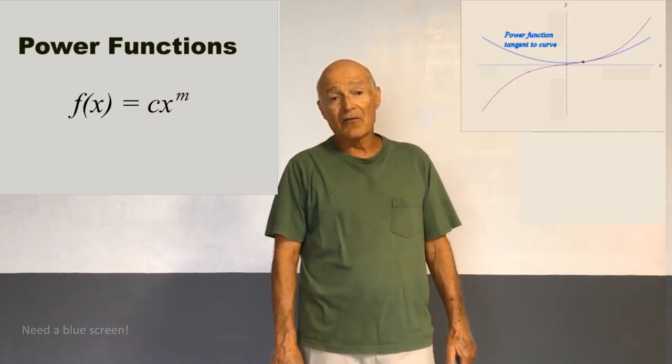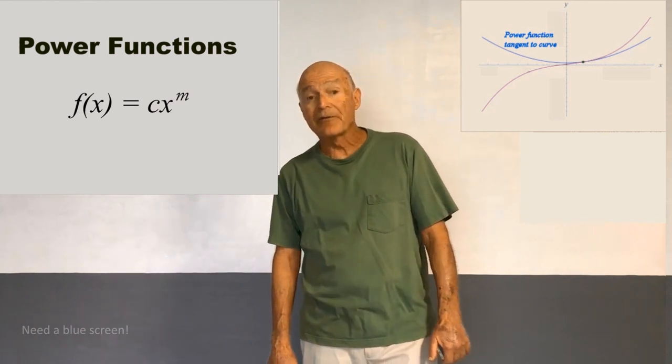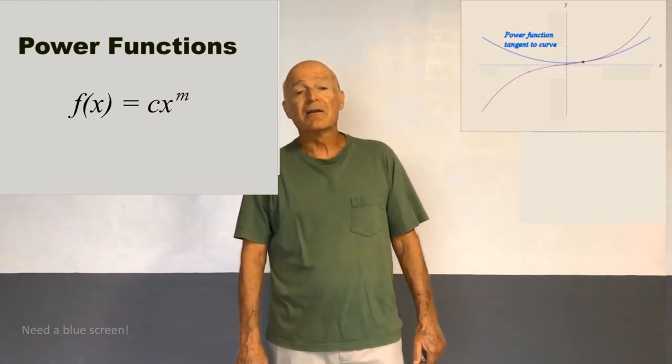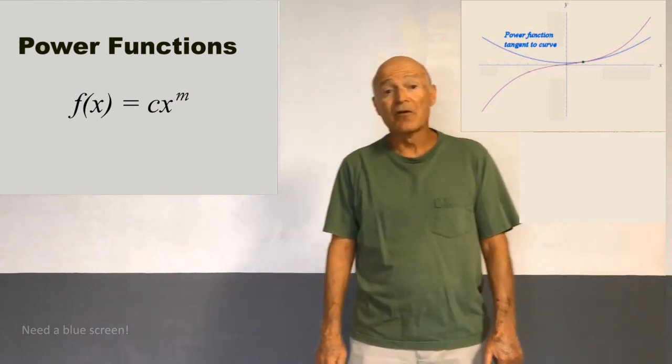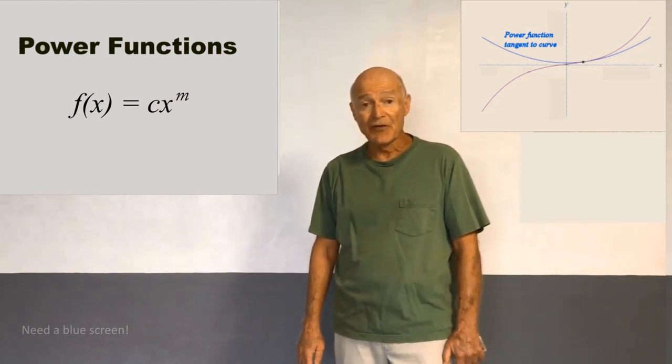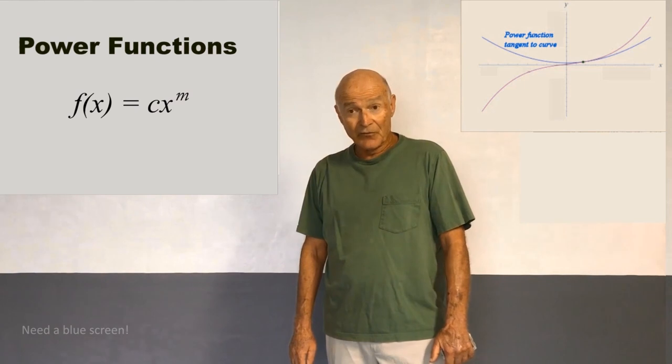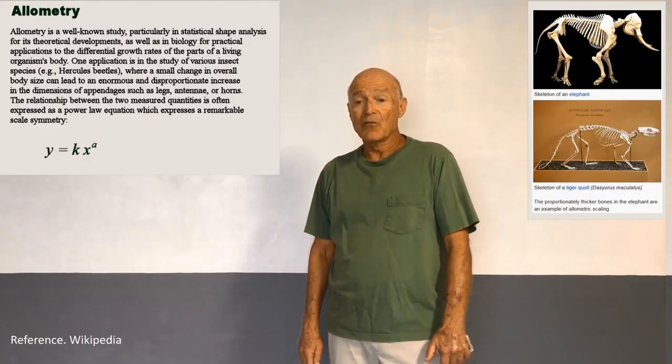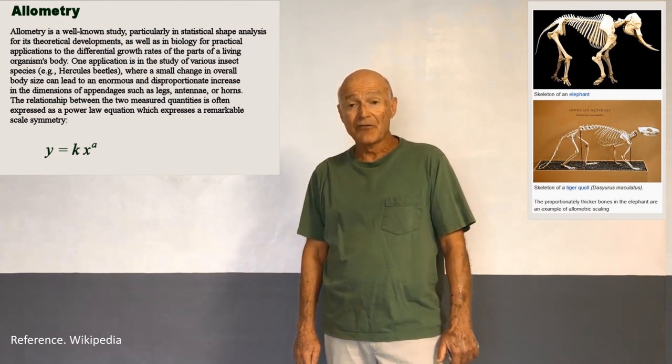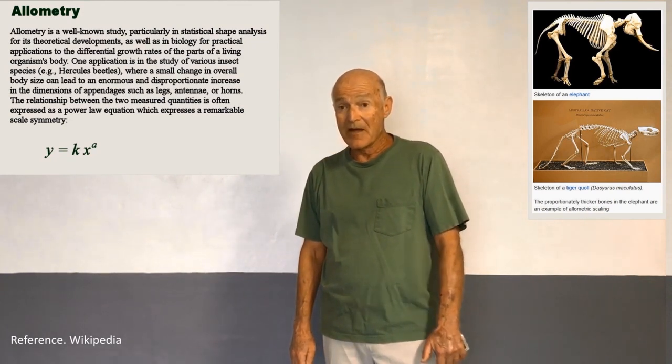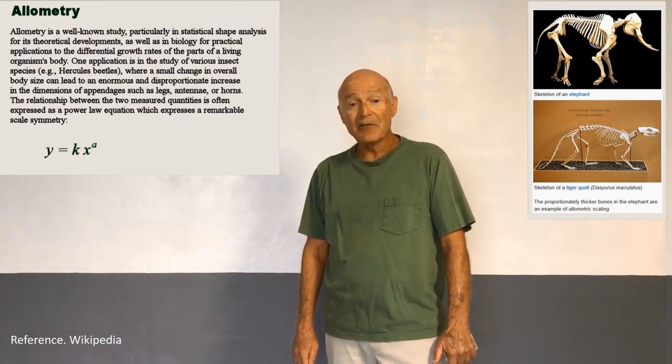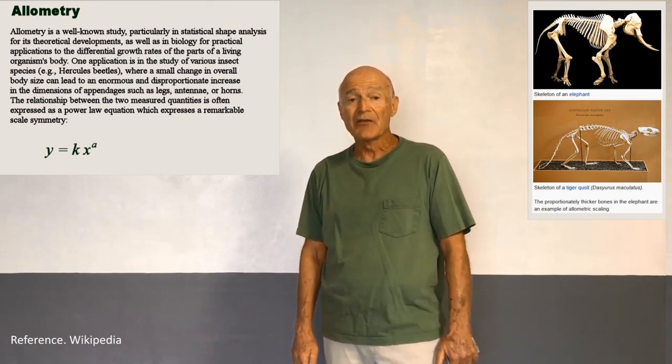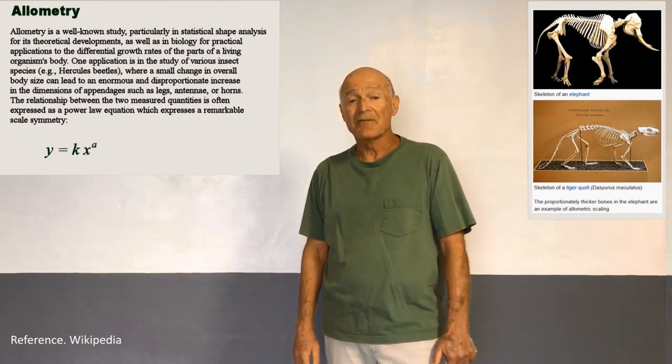We're using power functions to approximate other functions. Approximation theory is very important in science and engineering. Solutions to problems don't always come out very simple. And when you have a complicated function that you want to evaluate, sometimes it can't be done. So the next best thing is to try to get a good approximation, as good as you can get.